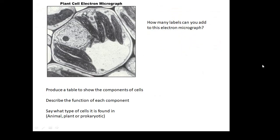So having talked about all the bits, here's an electron micrograph of a plant cell. How many labels could you add to that picture? Produce a table to show the components of the extra components in a plant cell. Describe the function of each component. Say what type of cell it is found in. Is it in an animal cell or a plant or a prokaryotic cell?